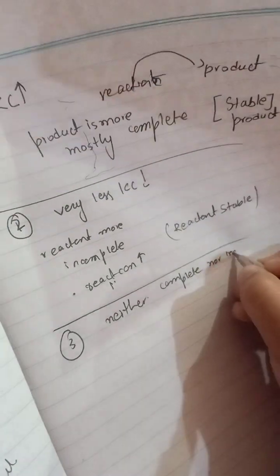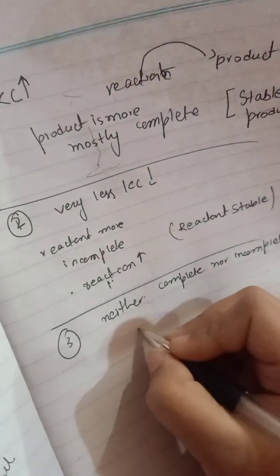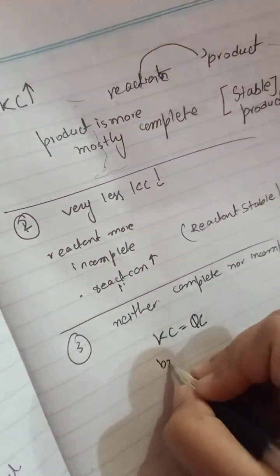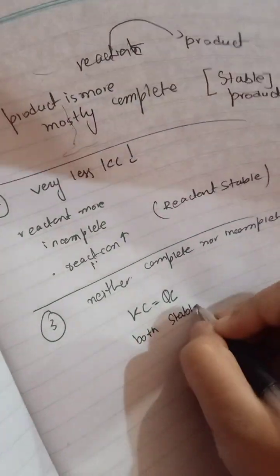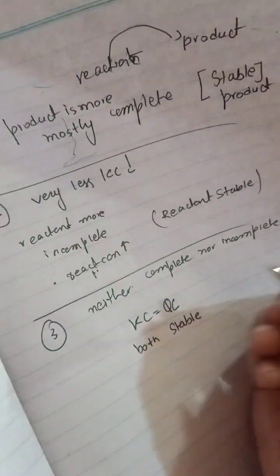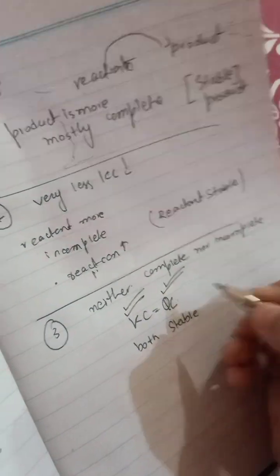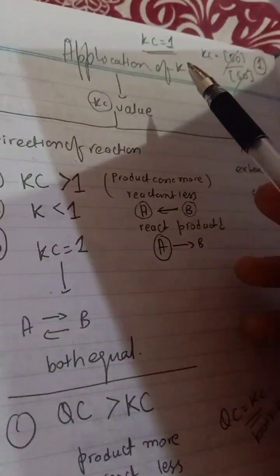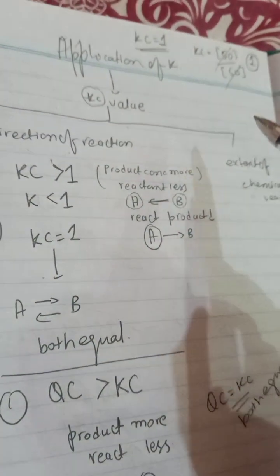Third, if the reaction is neither complete nor incomplete, it means Kc is equal to Qc — both concentrations are stable, both reactant and product concentrations are at equilibrium. So this was about the application of Kc, which depends upon the Kc values.